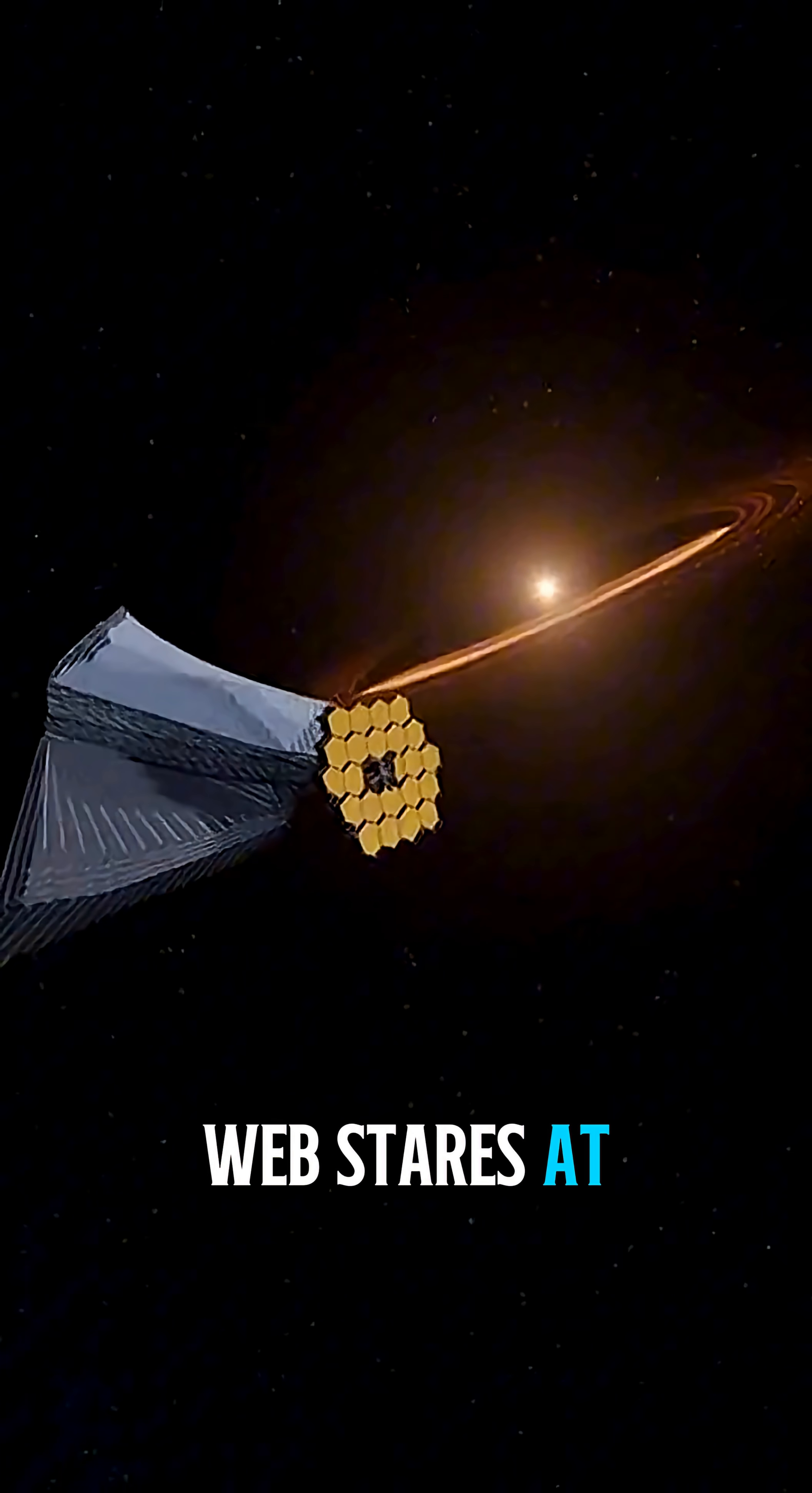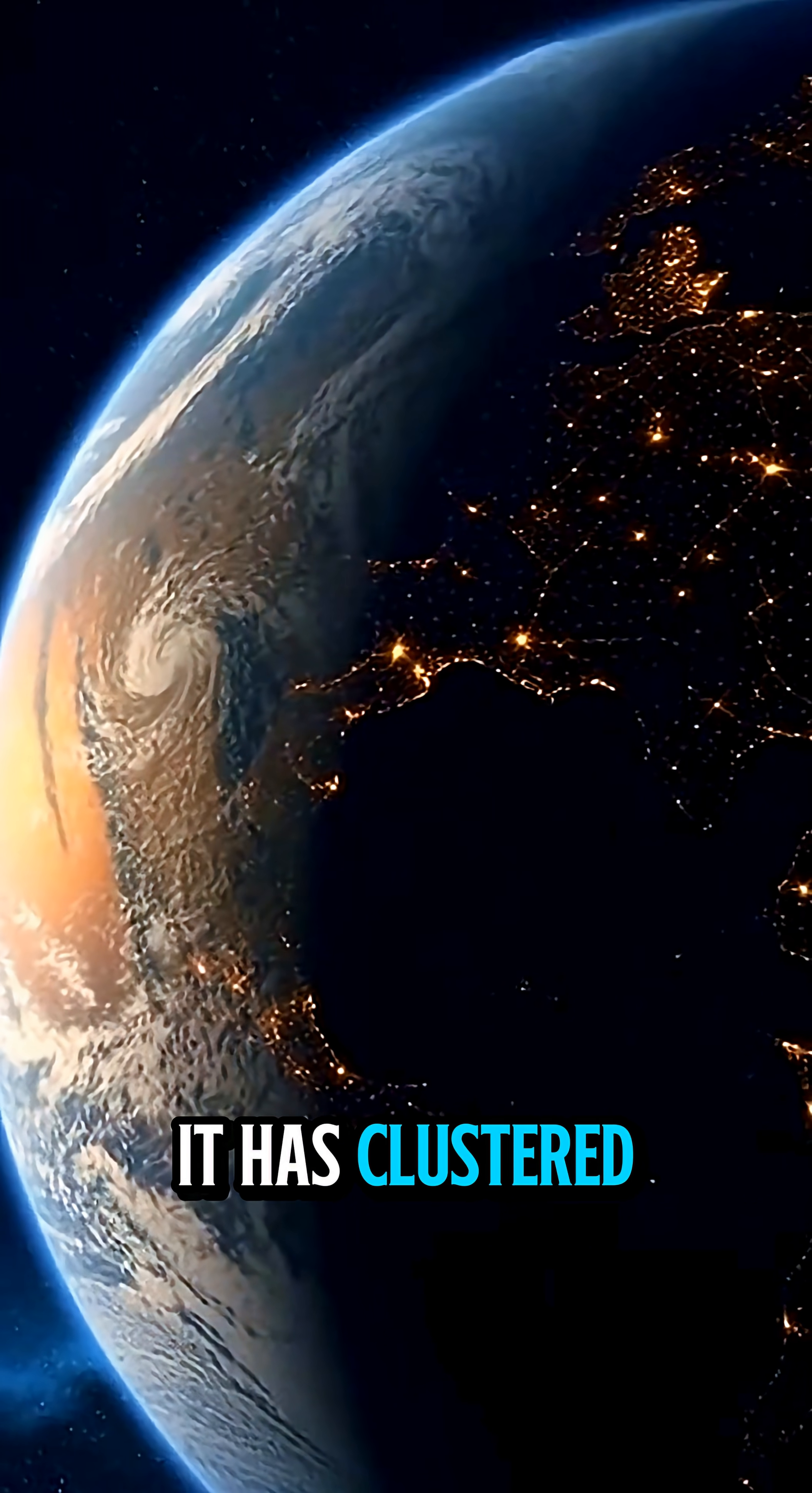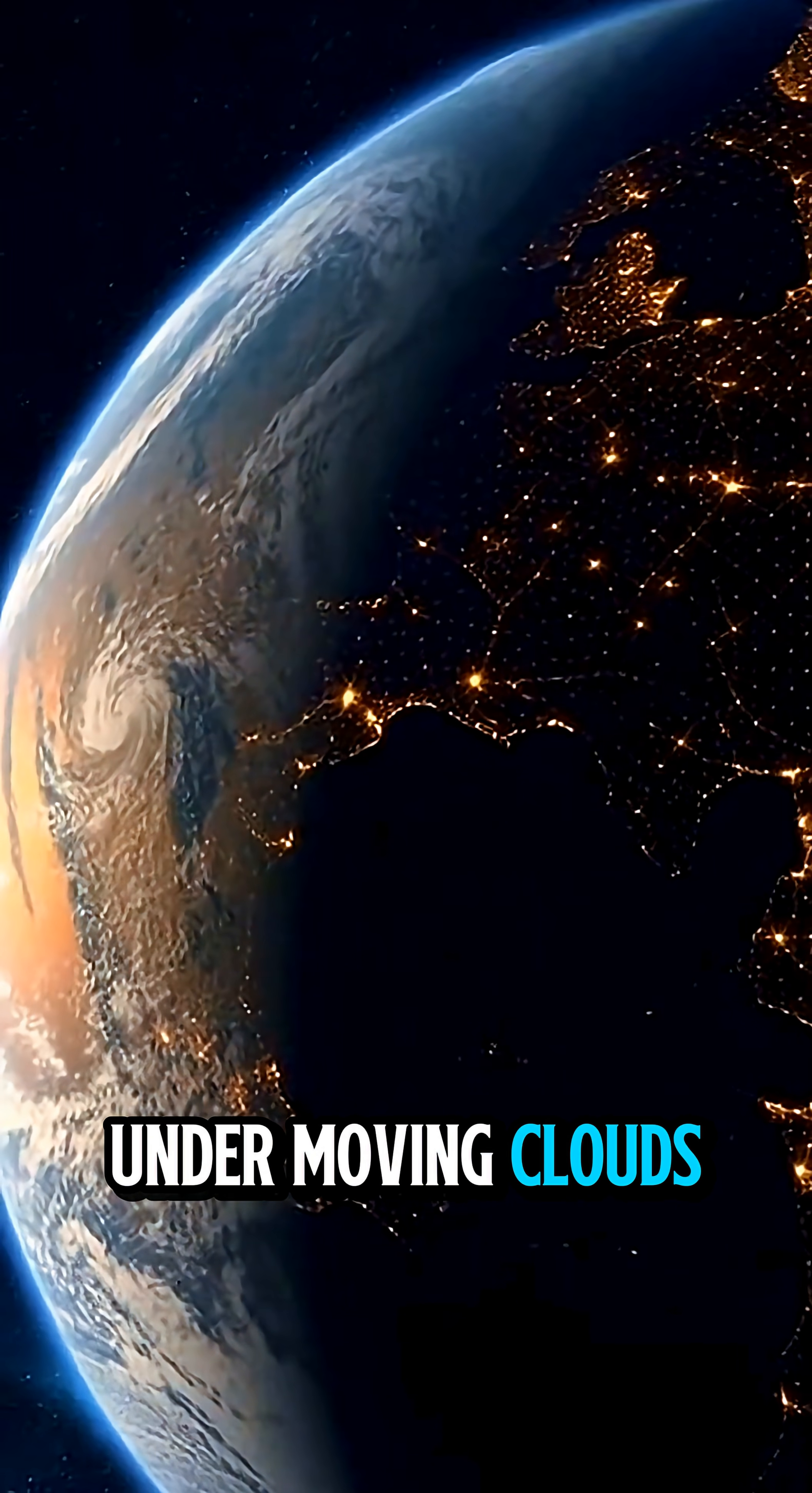Webb stares at a distant exoplanet and the night side isn't fully dark. It has clustered patches of warm glow, like city lights under moving clouds.